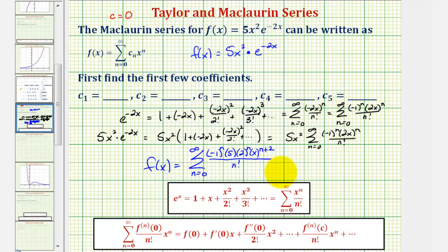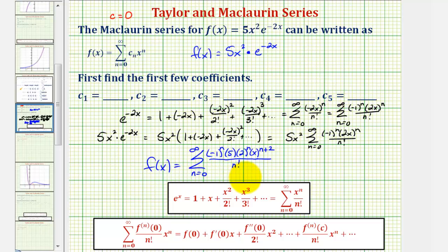Now we'll start generating terms to find c sub 1 through c sub 5. Notice c sub 1 is the coefficient of the degree 1 term, c sub 2 is the coefficient of the degree 2 term, and so on. Let's do this on the next slide.